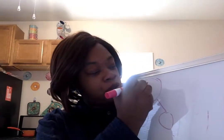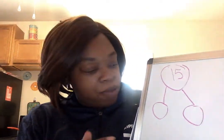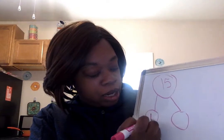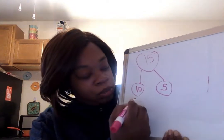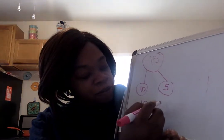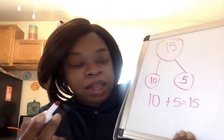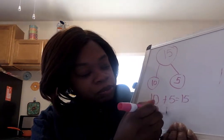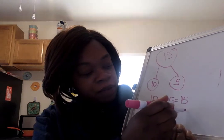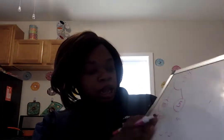Alright, I'm going to do another one. This time I'm going to put the number 15 in my whole. And I know that 15 is 10 ones and 5 ones. So I can put 10 here and I can put 5 here. Now I can write my number sentence: 10 plus 5 equals 15. Another way that I can write that is 15 equals 10 plus 5. Alright, great job.